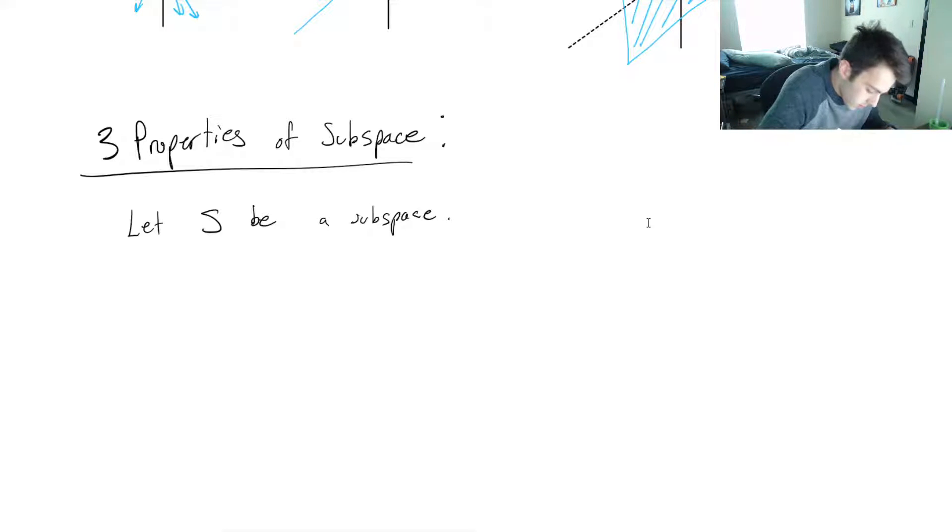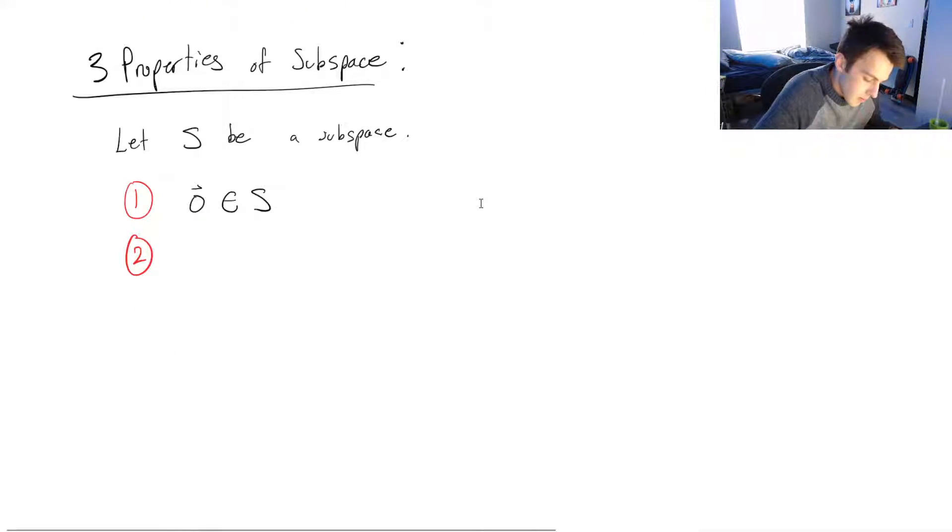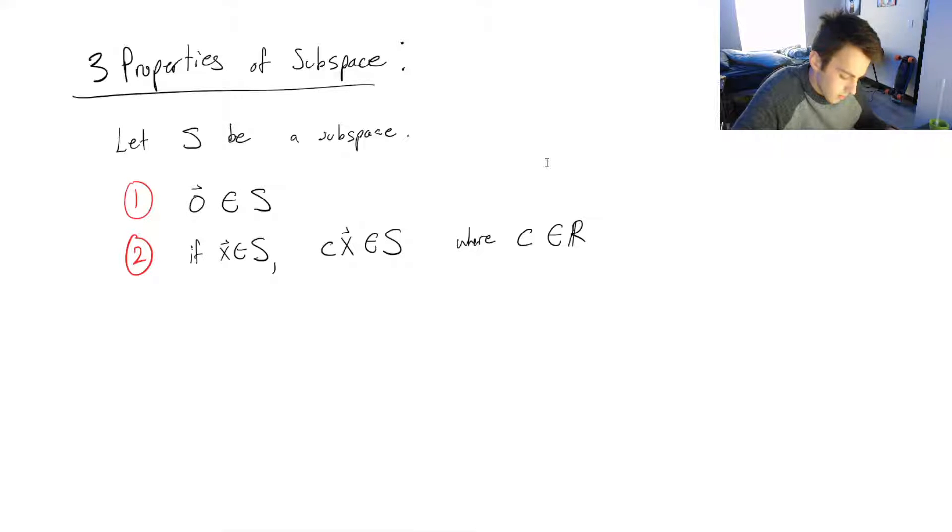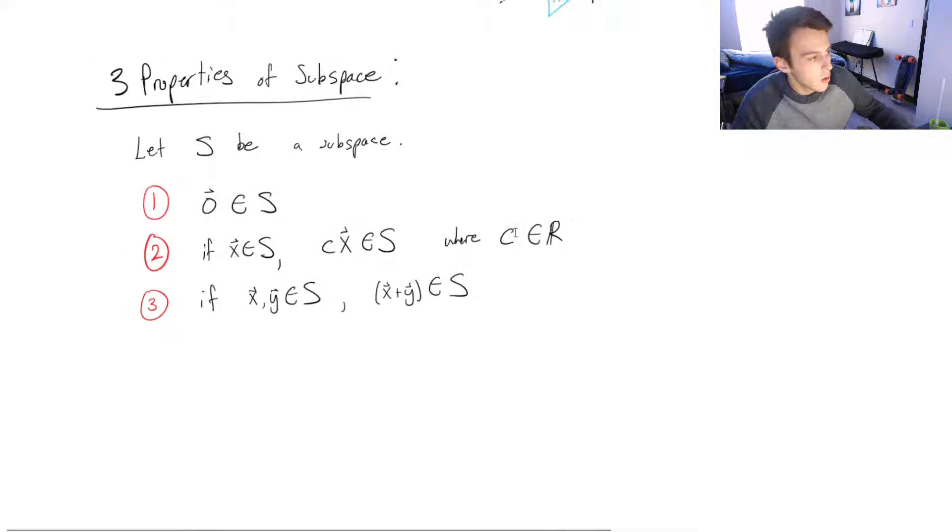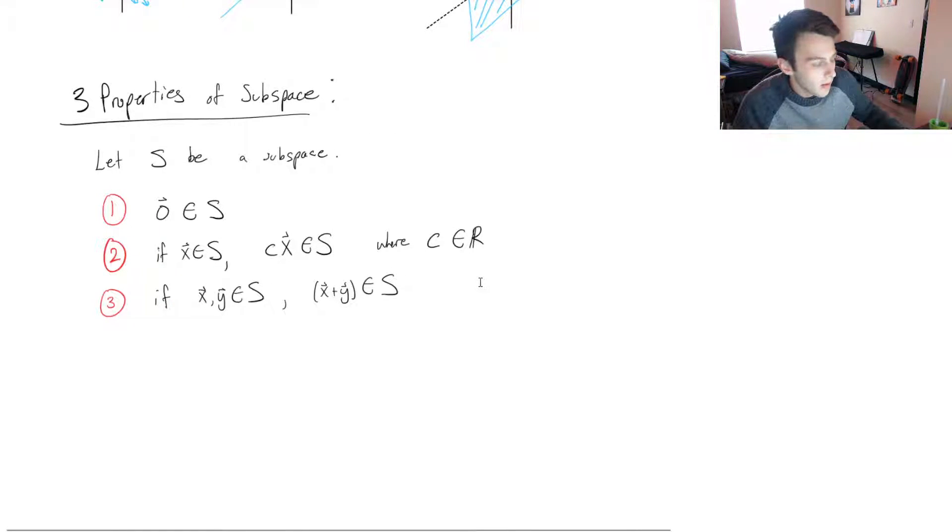So number one, the zero vector needs to be in the subspace. And I'm going to go over these geometrically in just a second. Number two, if X is in the subspace, any scalar times X must also be an element of the subspace, where C is in the subspace. And then number three, if X and Y are in the subspace, then the addition of those two vectors must also be in the subspace. So that kind of looks like a whole lot of nothing, but let's take this into an example.